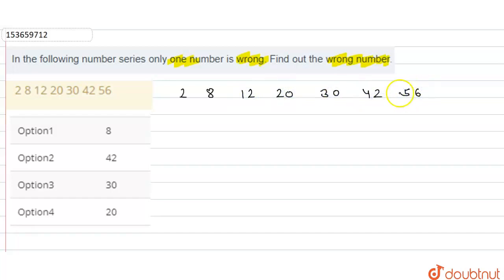This is our series. In this series, if we find out the difference between these two numbers, first of all, let's look at the difference in this series. This series is increasing, which means either there will be a multiplication or a difference, we will get our pattern.